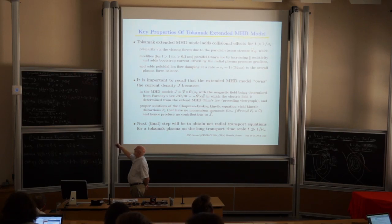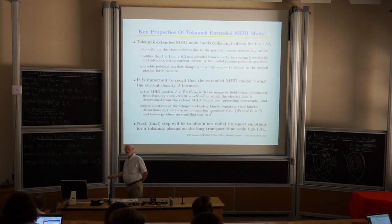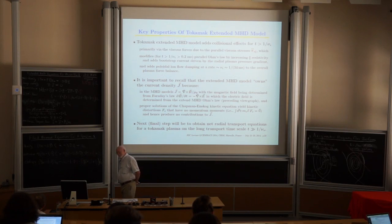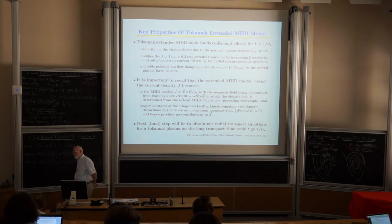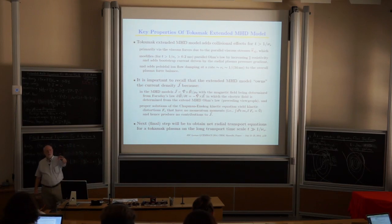The V cross B term — this one is actually a diamagnetic type flow, so it's an omega_star. That's a slower process, like resistivity — the diamagnetic two-fluid effect that Javier was talking about.